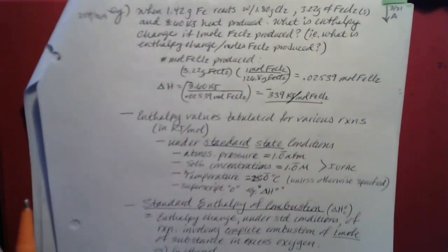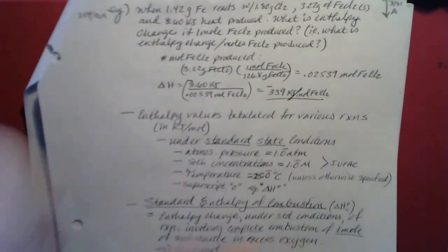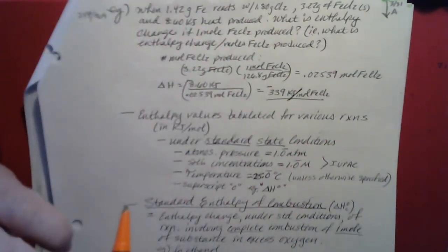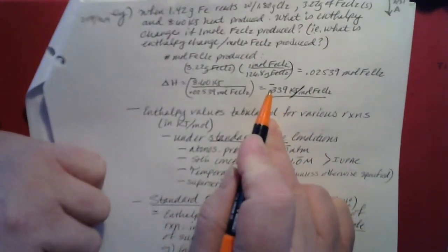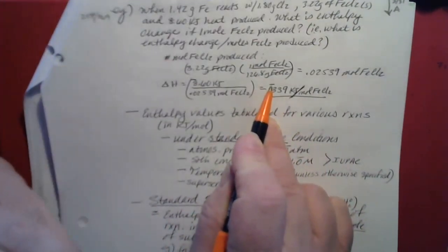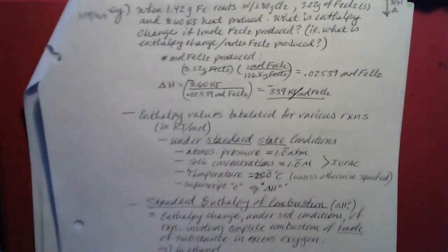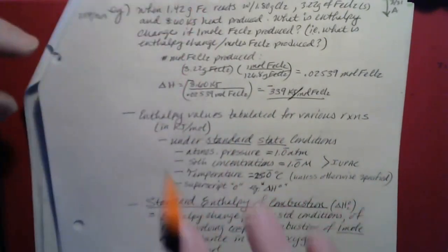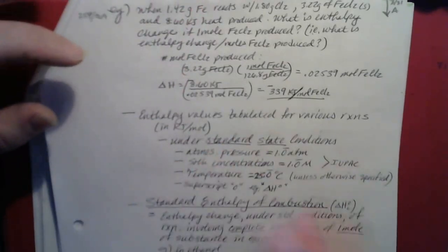The book may report this as a positive number because if the question asks how much heat is produced, you could report it as positive, since 'produced' already implies it's given off. But it's better to stay on the safe side: if heat is being produced, report all numbers as negative. Delta H and Q should both be negative if heat is being produced, so you won't get tripped up by the wording of the problem.